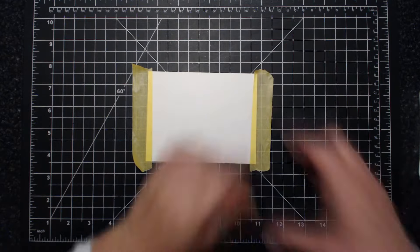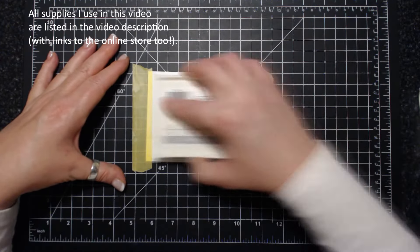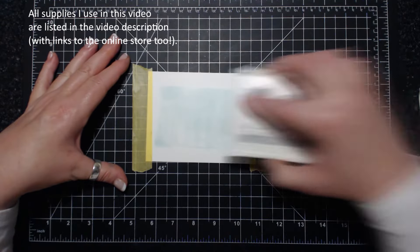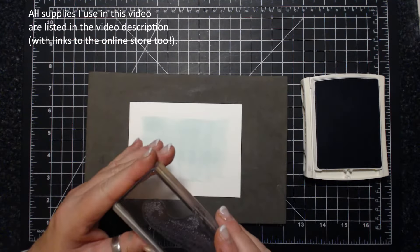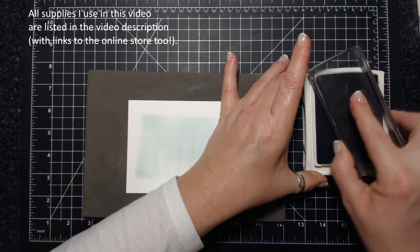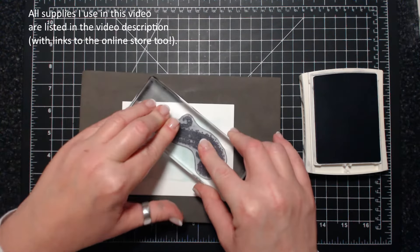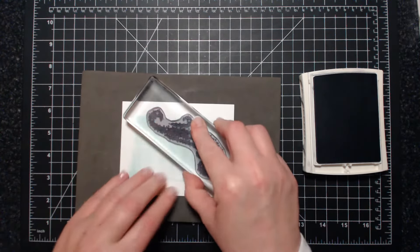This is called direct to paper or ink to paper technique and it does take a bit of practice. You can try to get this light, but it's actually kind of difficult.